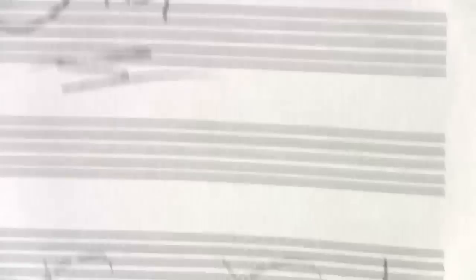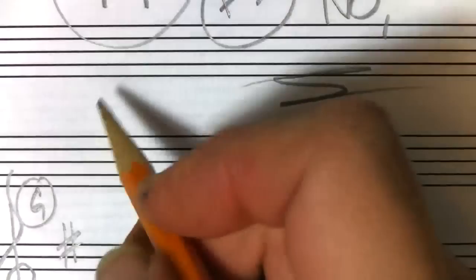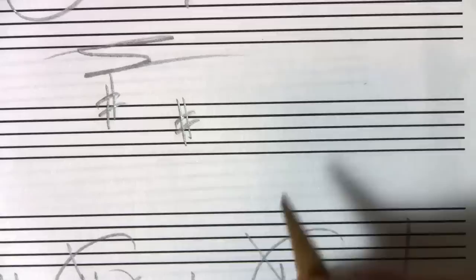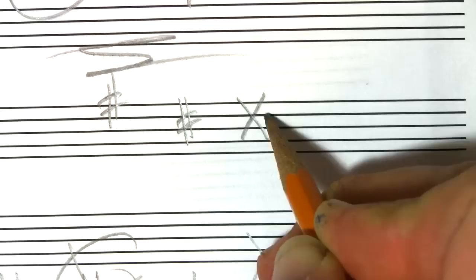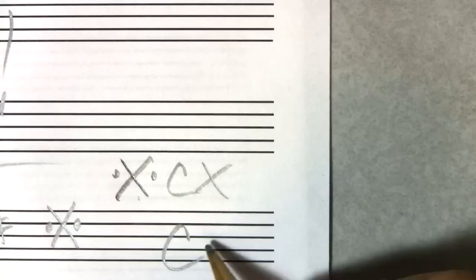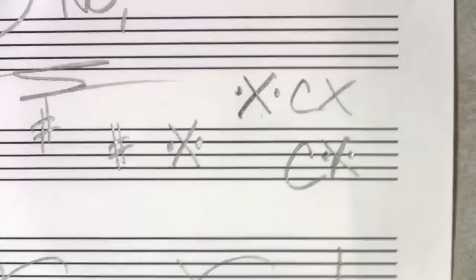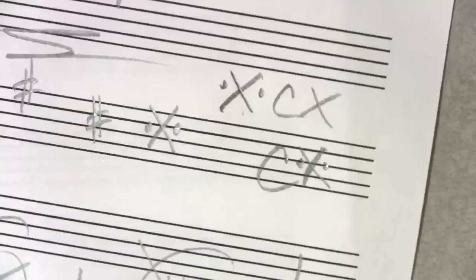A double flat is two flat symbols next to each other. A double sharp is an X with the center point right on the space or line, with two dots. In word processors people sometimes just use an X — CX means C double sharp. In written music it's a C with an X and two dots. Double sharp means the note is sharped twice.